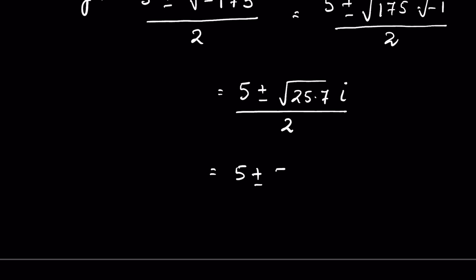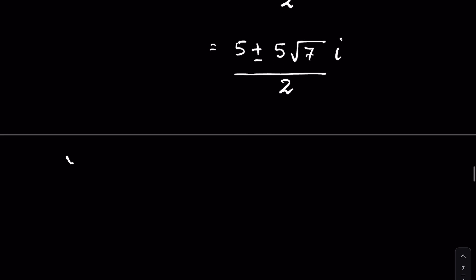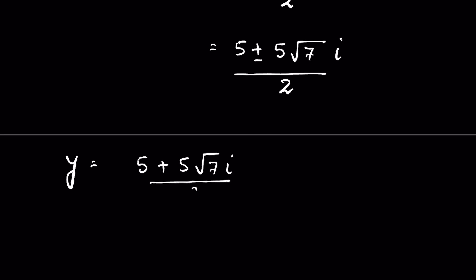Simplifying, y equals 5 plus or minus 5 times the square root of 7 times i, over 2. So the two values for y are: y₁ equals 5 plus 5 times the square root of 7i, over 2.